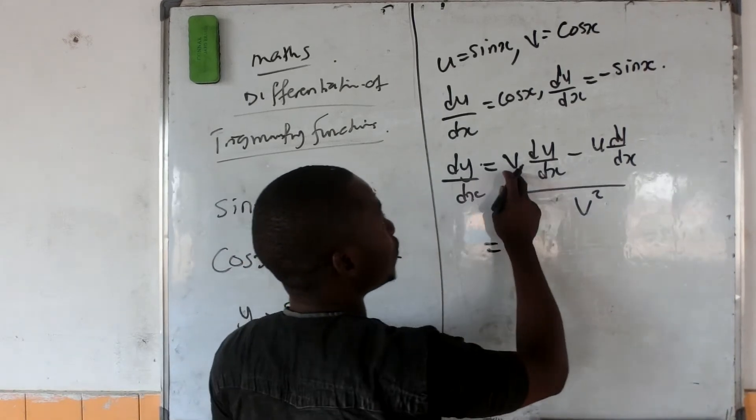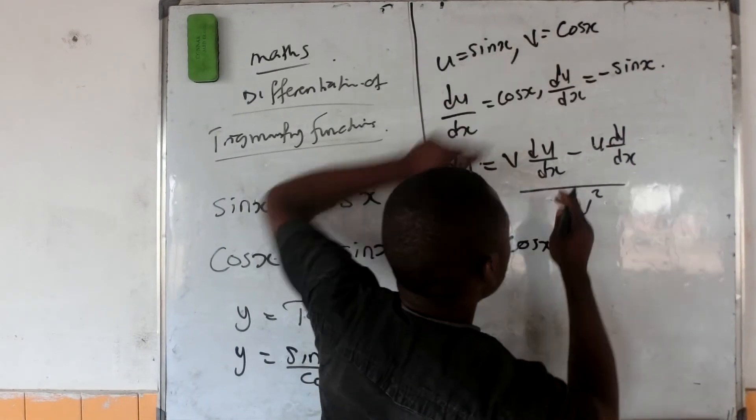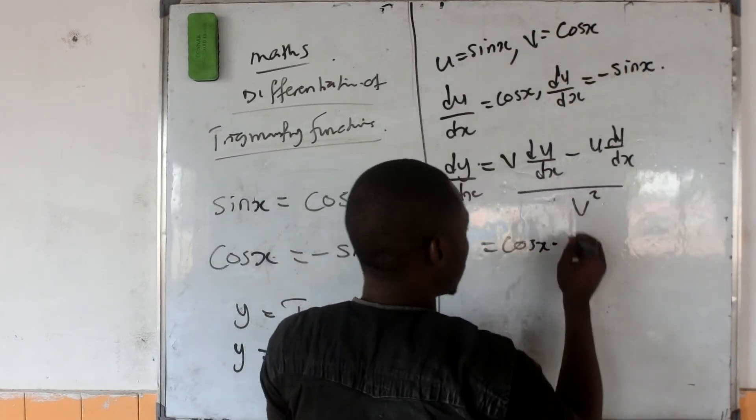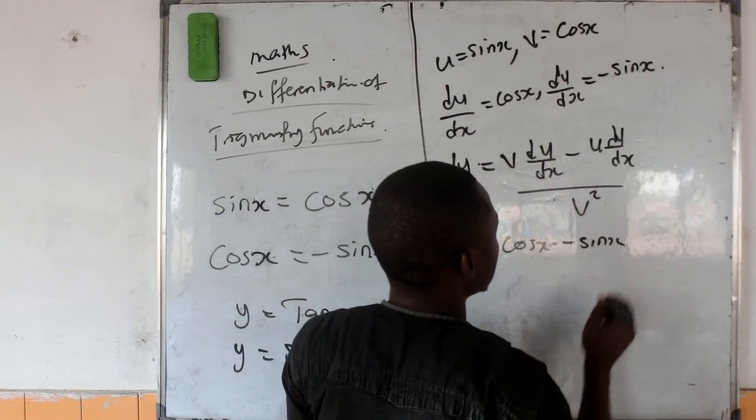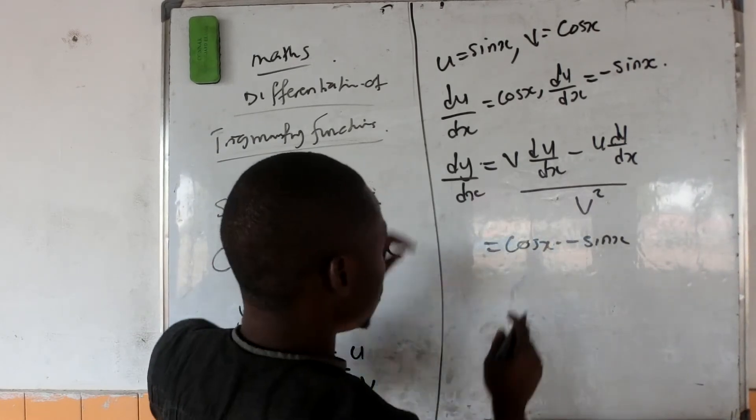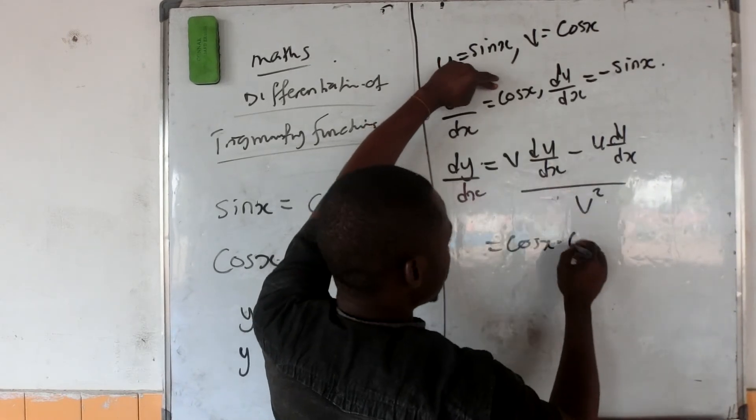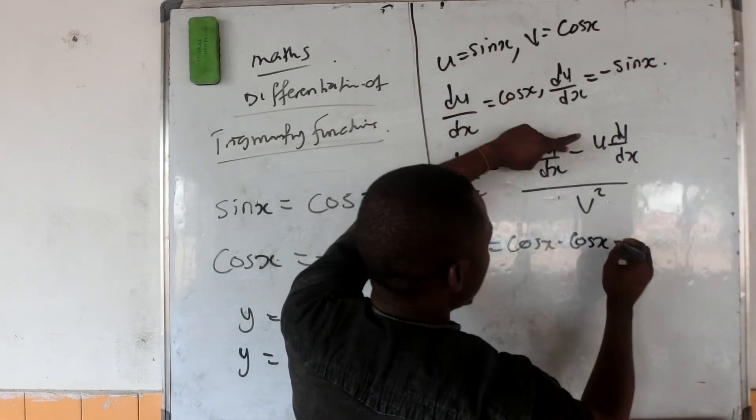Now, what is your v? Your v is cos x. Times what is du/dx? The du/dx is cos x. What is your u? The u is sin x.